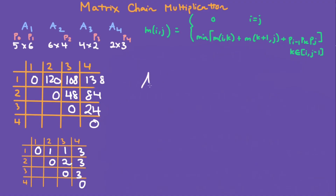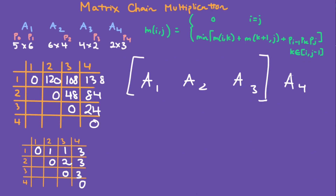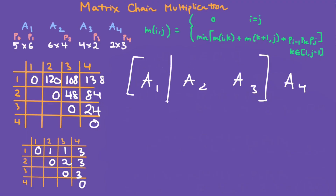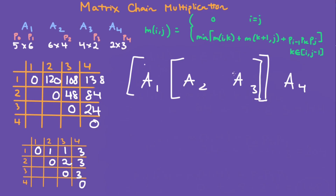Now the last step: write out A1, A2, A3, A4. From 1 to 4, we need to split it — that's right here, it says k is 3, so we split after A3. Then from 1 to 3, k is 1, so we split after A1. Now for the remaining subproblems, 2 to 3 no longer needs splitting since it's just two matrices. You don't really need those extra brackets — both ways are fine, and that's basically it.